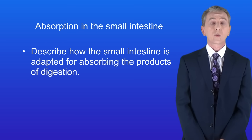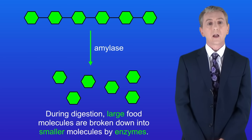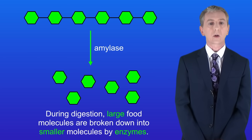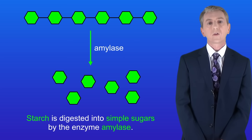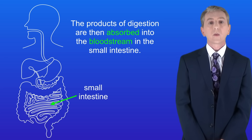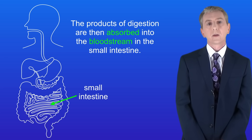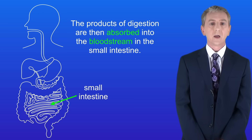Over the last few videos we've been looking at the digestive system. We've seen that during digestion large food molecules are broken down into smaller molecules by enzymes. So for example starch is digested into simple sugars by the enzyme amylase. The products of digestion are then absorbed into the bloodstream in the small intestine. So in this video we're looking at how the small intestine is adapted for absorbing the products of digestion.